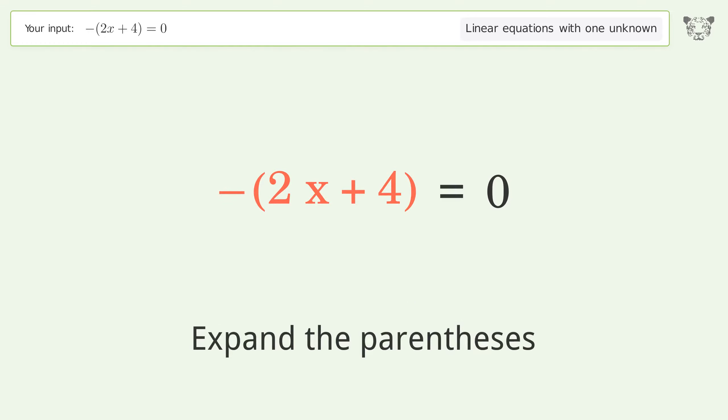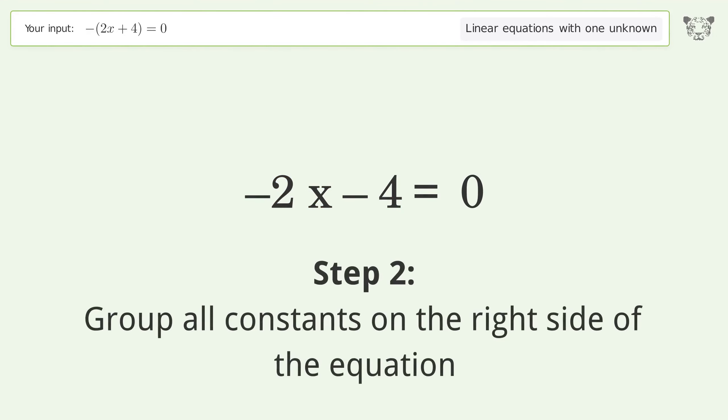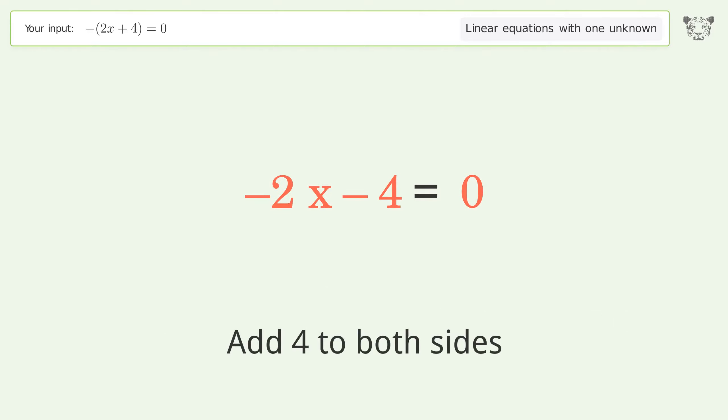Expand the parentheses. Group all constants on the right side of the equation. Add 4 to both sides. Simplify the arithmetic.